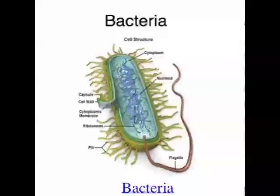Once bacteria have been transmitted to a new host, they need an appropriate environment to reproduce — the right temperature, pH, water, and nutrients. In the right conditions, bacteria can replicate every 20 minutes, so in a very short period of time you can have enough bacteria to cause disease.